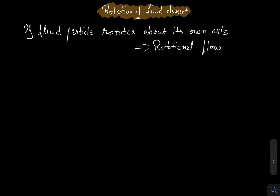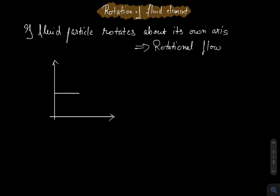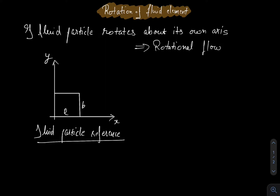To understand it more clearly, let us consider a fluid element. This is our reference coordinate axis — x and y axis — and here is our fluid element. The fluid element has length l and breadth b. This is the x-axis, this is the y-axis, and the axis coming out of the plane is the z-axis. Now, what can happen to this fluid particle when it flows? What are the possible cases?